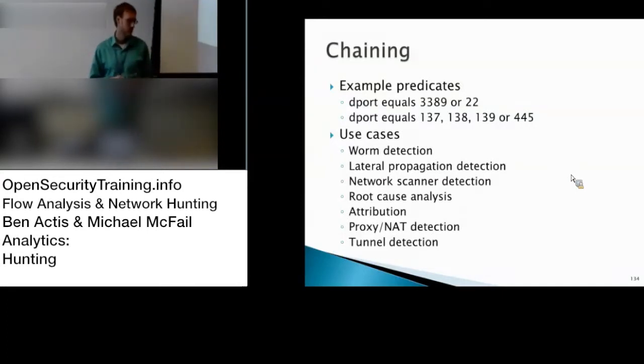Attribution, sort of a sub-category of root cause analysis. So again, let's talk about the lateral movement example again. If you've got chaining over SMB, you can find out where that chain started. Maybe then you can go back and try to figure out where the attack came in from. Proxying NAT detection. Sort of the same thing as network scanner detection. Then tunnel detection, which I sort of alluded to earlier. If you've got chaining, let's say it's over SSH. You've got a connection from A to B, port 22, and another one from B to C, port 22, and they've got roughly the same size. And roughly they happened at the same time. That's probably tunneling. Maybe somebody's using a box as a hop point.